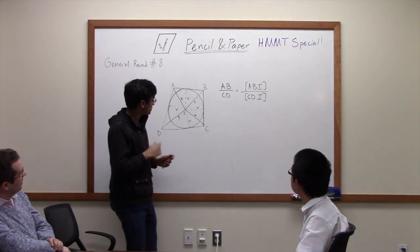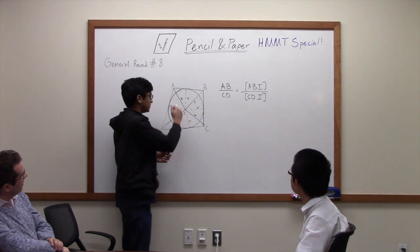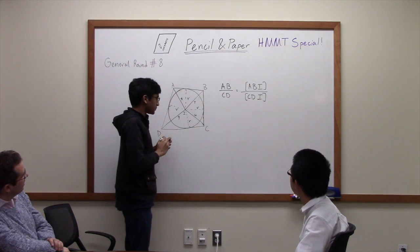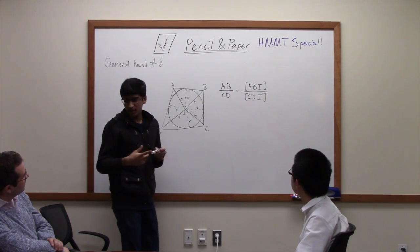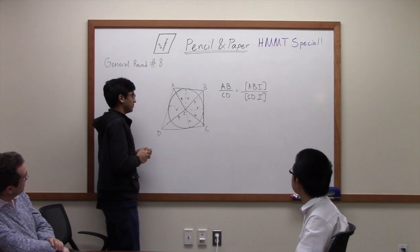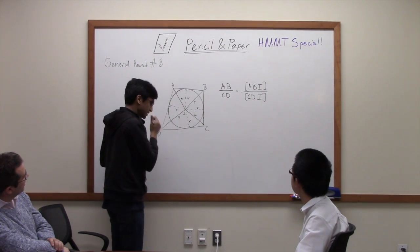And we also know something else about these two triangles. We know two of the side lengths. So we know another formula for the area of the triangle, which is one half AB sine C.